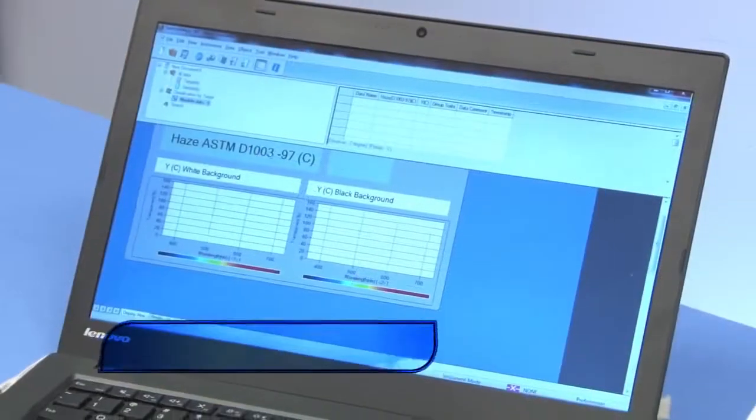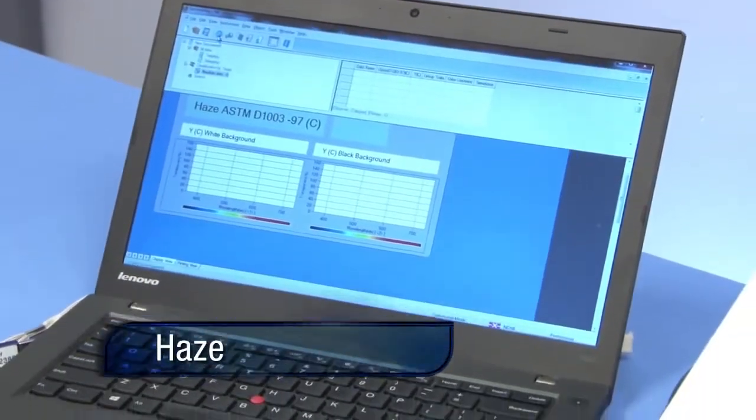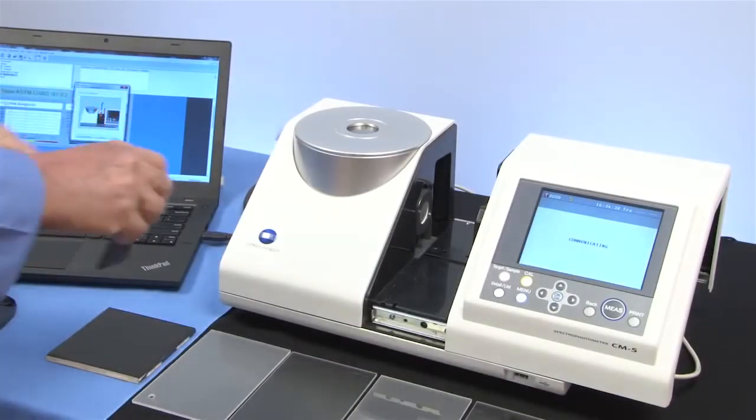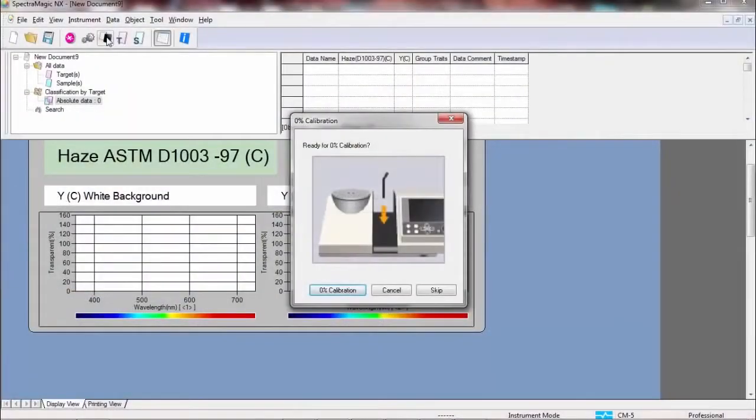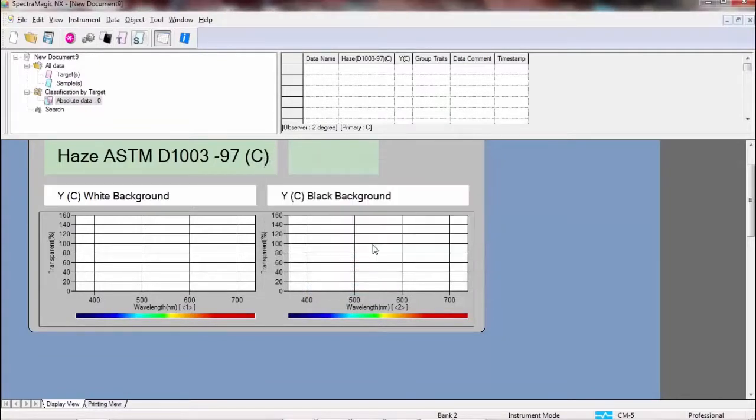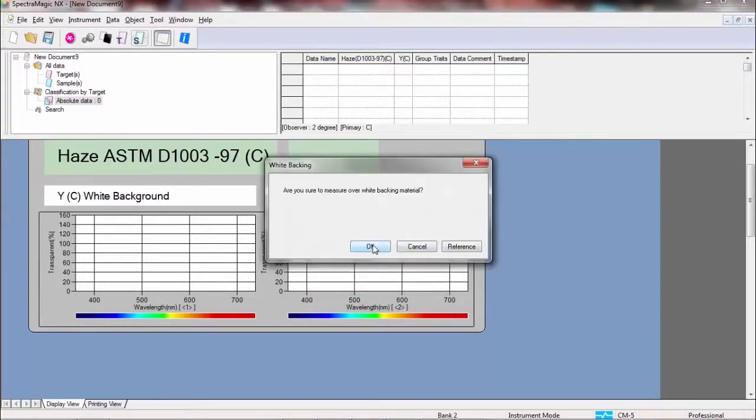For haze measurements, the CM5 is driven by user-friendly Konica Minolta sensing SpectraMagic NX software. This procedure requires a measurement over a contrasting background. When creating a target, you will be prompted to take two measurements for each reading, one over white and the other over black.